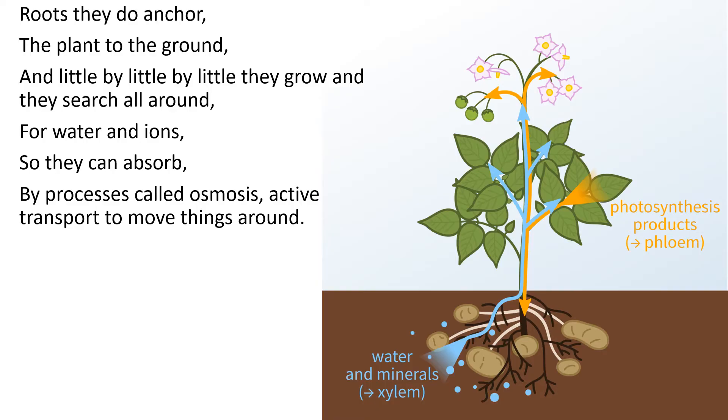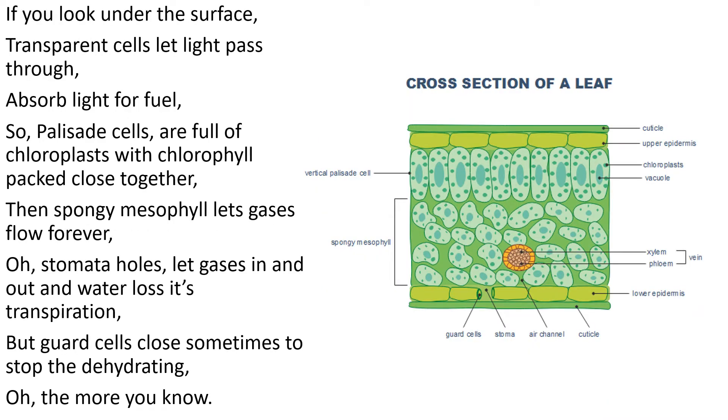By processes called osmosis, active transport to move things around. If you look under the surface, transparent cells let light pass through.